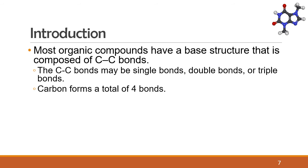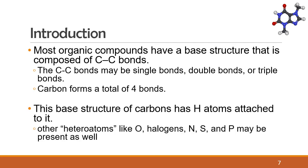Most organic compounds have a base structure composed of carbon bonded to another carbon atom. The C-to-C bonds may be single, double, or triple. Carbon forms a total of four bonds. Not all compounds that contain carbon can be considered organic compounds. For instance, carbon monoxide and carbon dioxide are not organic compounds. Carbon atoms bonded to hydrogen atoms are organic compounds. These carbon-to-hydrogen molecules can have oxygen, nitrogen, sulfur, and phosphorus atoms bonded to them and still be considered organic compounds. Note that these heteroatoms are all non-metals like carbon.